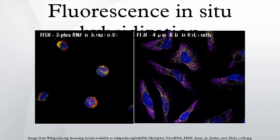QFISH combines FISH with PNAs and computer software to quantify fluorescence intensity. This technique is used routinely in telomere length research. FlowFISH uses flow cytometry to perform FISH automatically using per-cell fluorescence measurements.